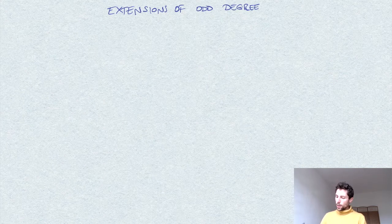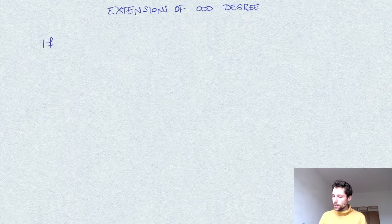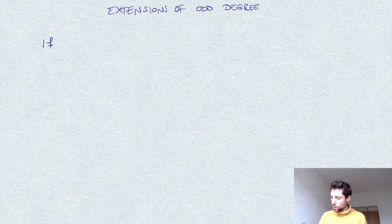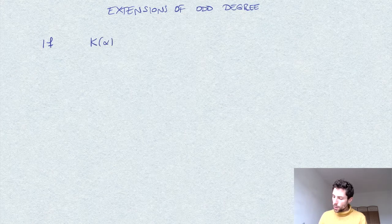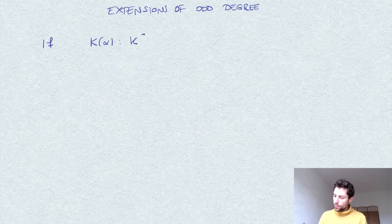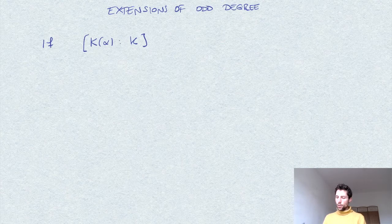So here is the statement I want to prove: whenever we have an extension, a simple extension, algebraic, of odd degree, extension of fields, say K(α) over K.